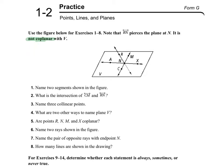So let's start with the first one. It says, name two segments shown in the figure. Remember that segments are written using the endpoints, and a segment is part of a line that has two endpoints. So in this case, I have segment AX — I'm putting that line on top — and segment CN. Those are the segments I'm seeing.